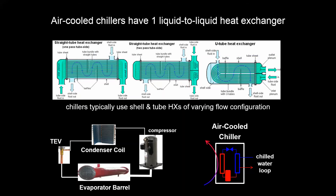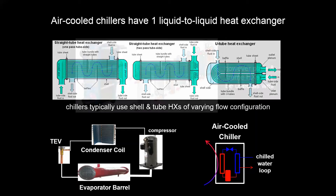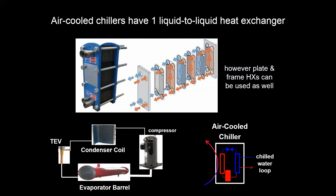So regardless of the type of chiller, it's always going to have an evaporator barrel. That can come in a couple different configurations depending on how the refrigerant is indirectly interacting with the chill water going past it or alongside it. There could also be a plate and frame heat exchanger, although this is more rare.